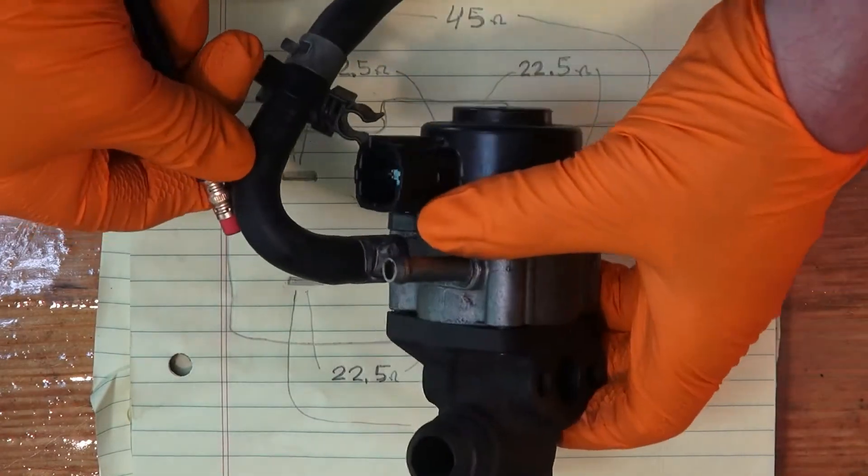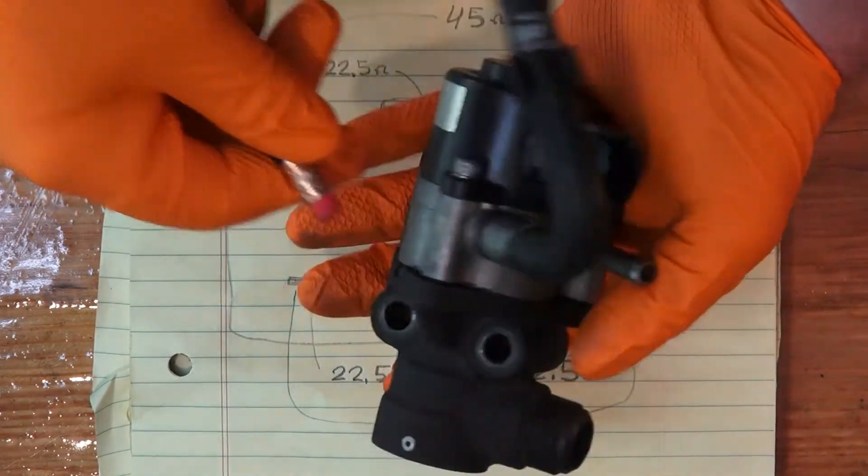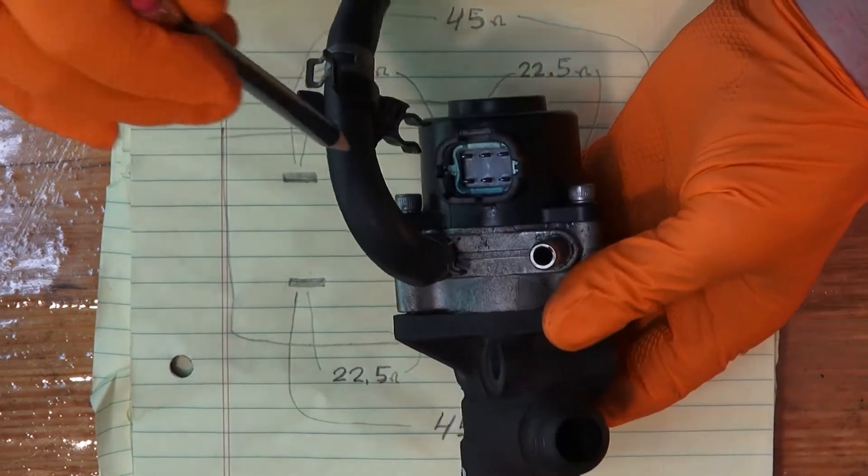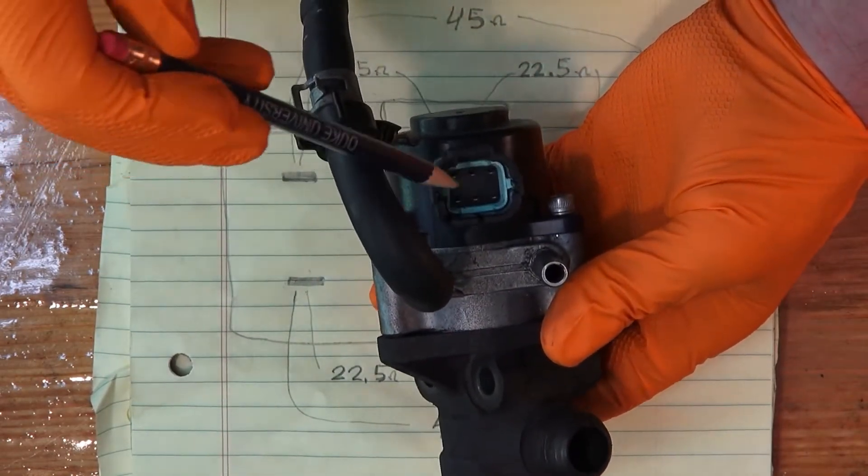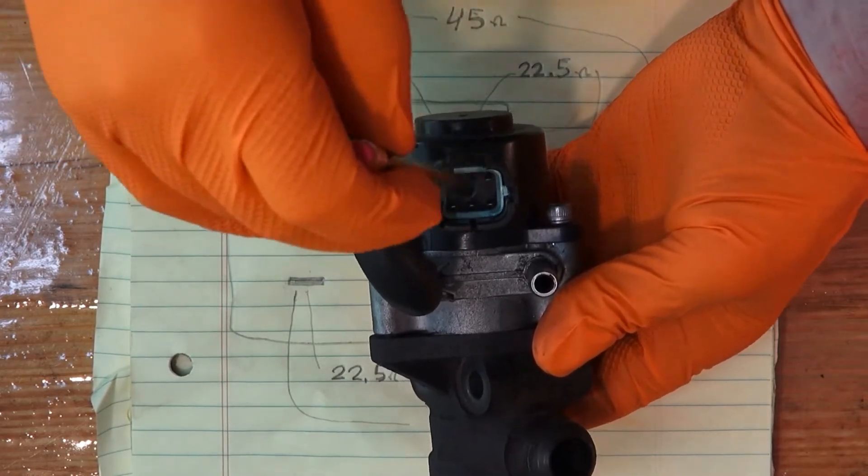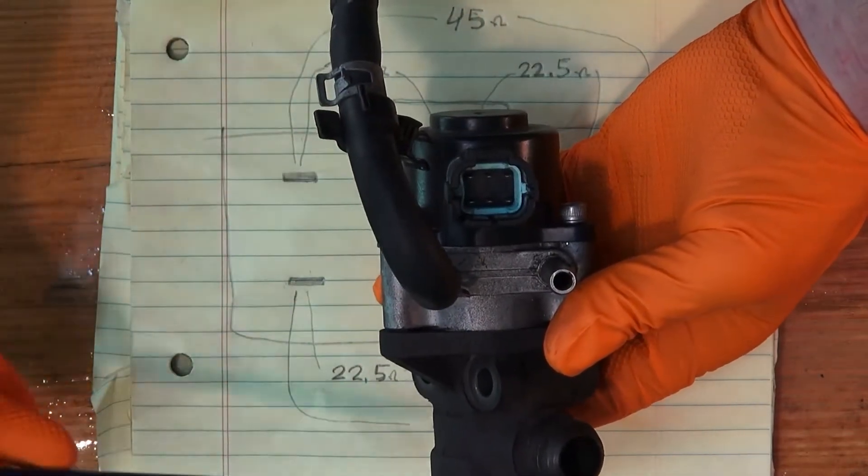I'm looking at an EGR valve for a 1999 Nissan Maxima and I was interested to check the resistance of the pins here on this connector. This is a servo motor control that controls the position of the EGR valve.